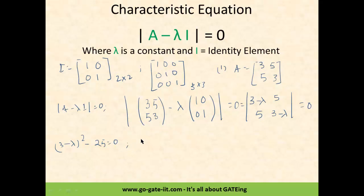After solving, we get the final characteristic equation: lambda squared minus 6 lambda minus 16 equals 0.